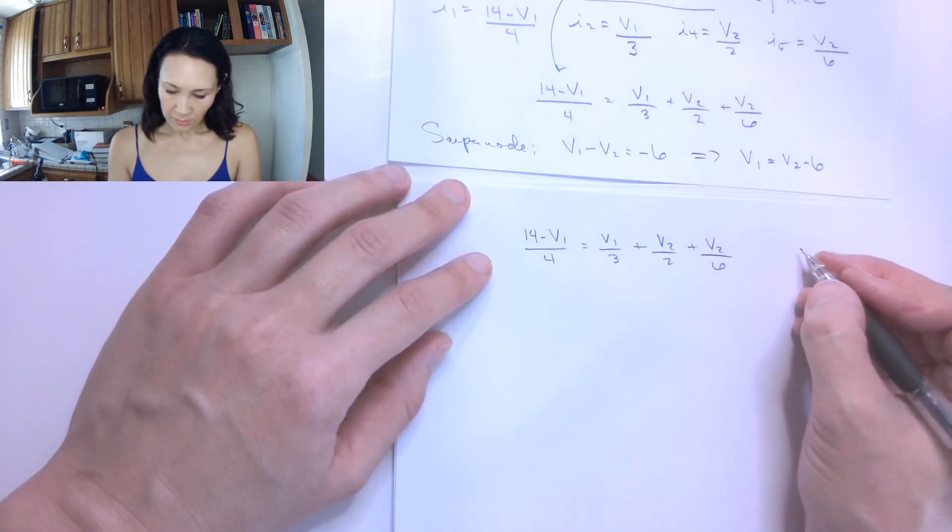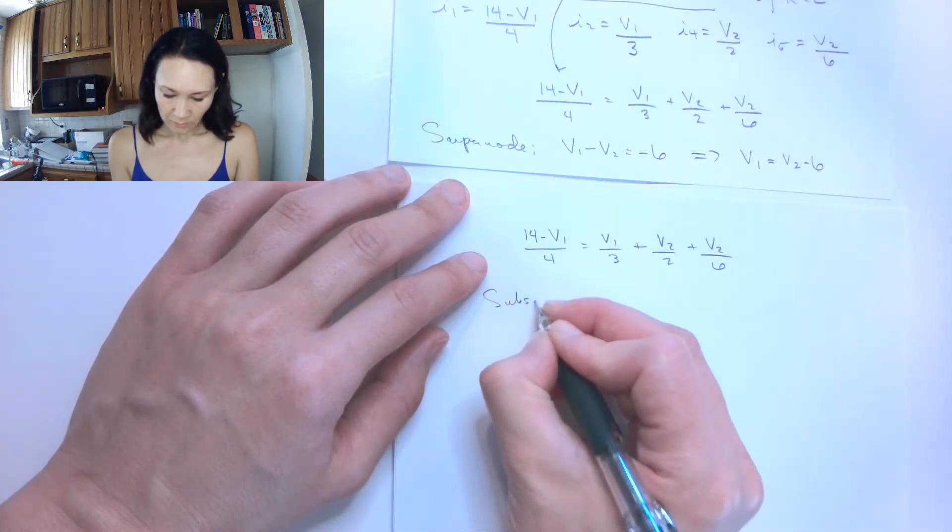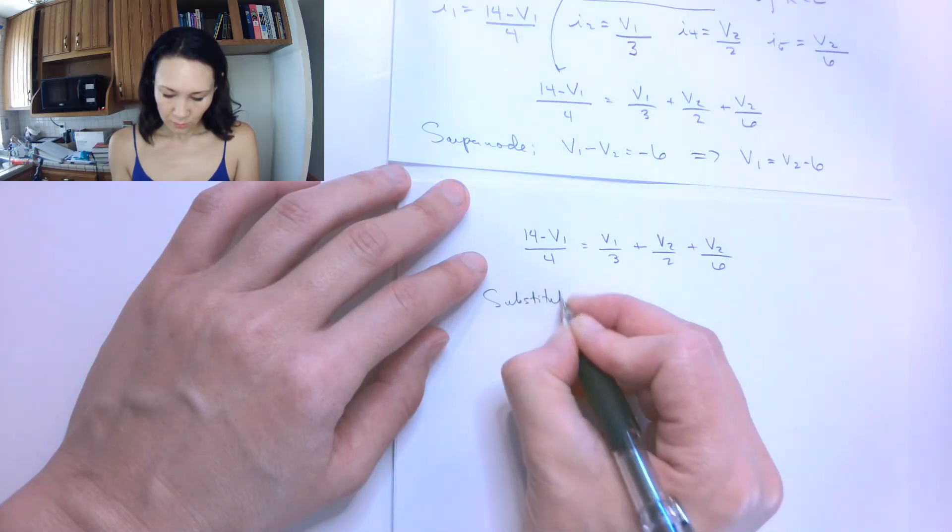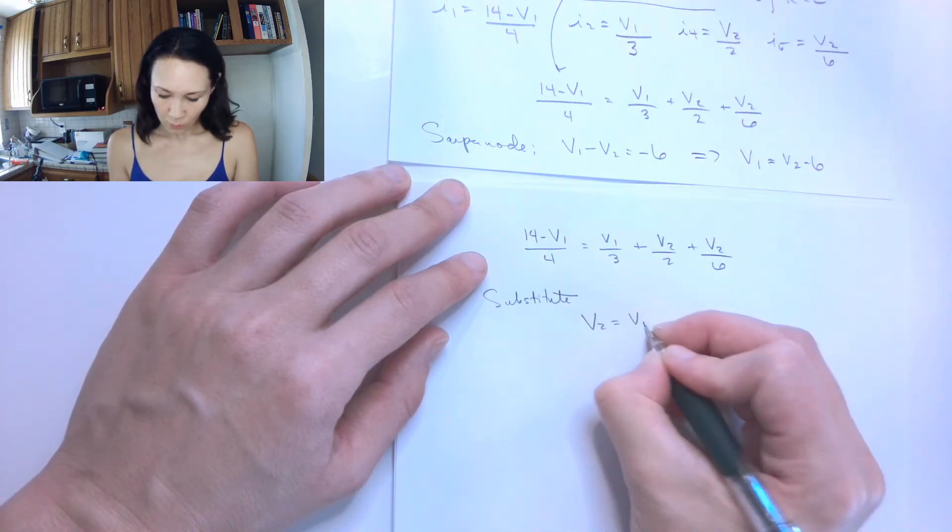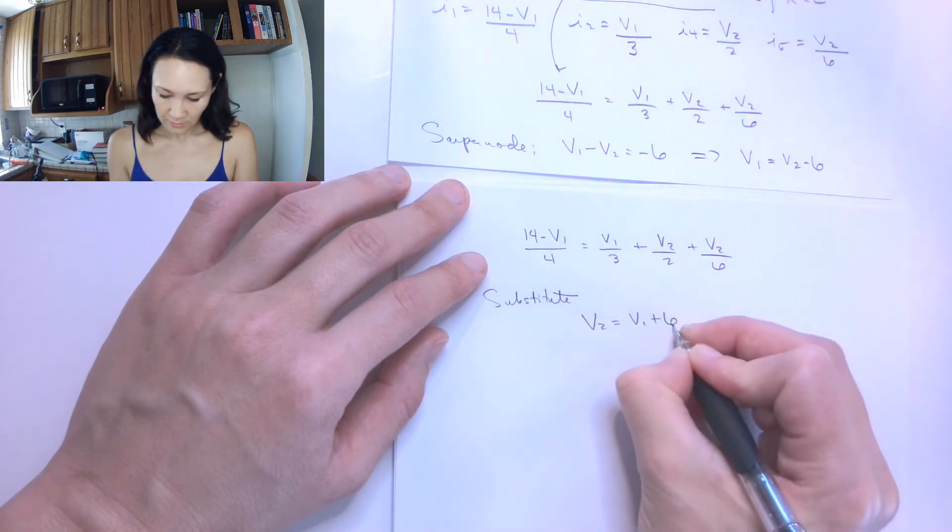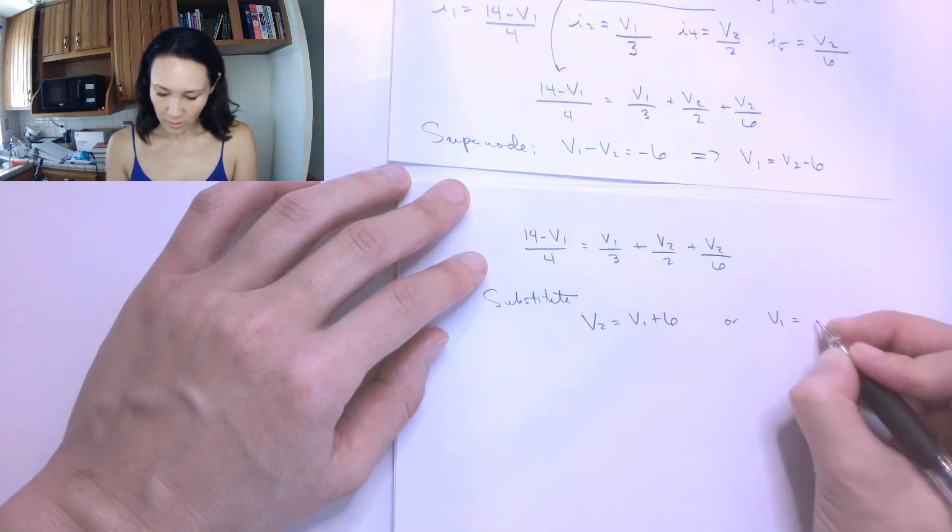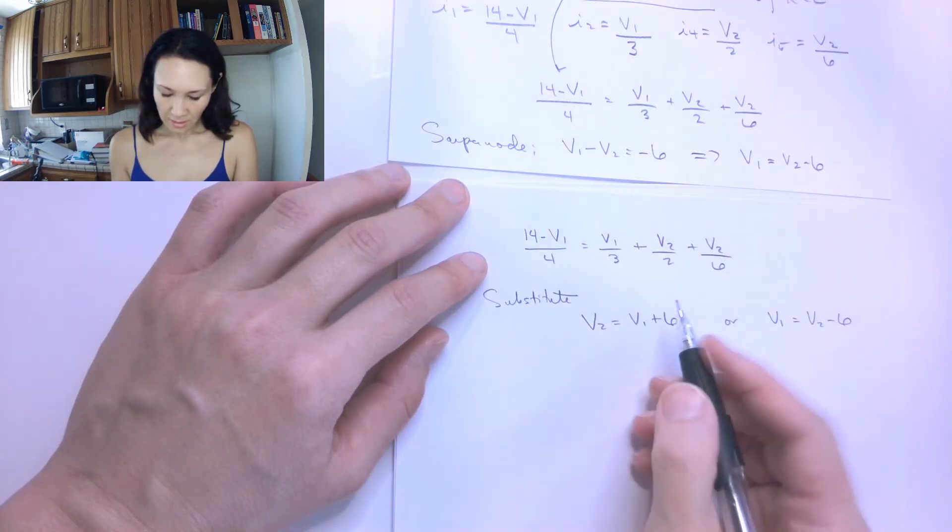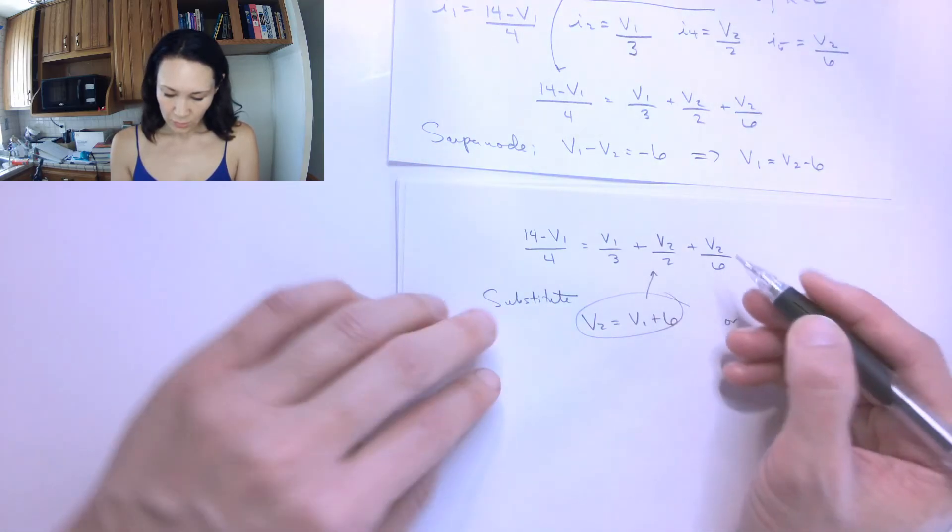I'm going to make a substitution. I can say that V2 is equal to V1 plus 6. Or if I wanted to substitute for V1, I could see V1 is V2 minus 6. I'm just going to go ahead and substitute in for V2.